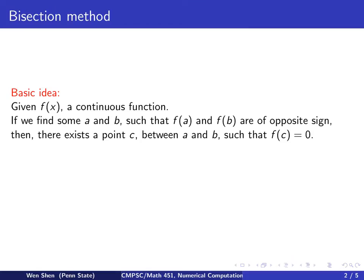We now look at bisection method. The basic idea of the bisection method is the following. Given a function f, a continuous function, assume we sample through the function and we manage to find two values a and b such that f evaluated at a and b take opposite sign. Say one is positive and the other is negative. Then we can conclude that there exists a point, we call it c, which lies between a and b such that f of c equals 0, meaning there exists a root on the interval from a to b.